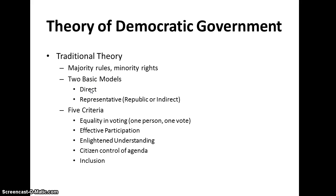In order for a government to be democratic, there are five basic criteria. The first is equality in voting — the idea of one person, one vote. Your vote doesn't count any more or less than anyone else's. Your parents' vote doesn't count more because they're older, mine doesn't count more because I'm a social studies teacher, and the president's doesn't count more just because he's the president, or someday she's the president.